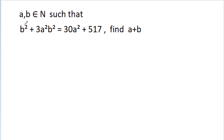In this video, we have given that a and b belong to natural numbers such that b squared plus 3a squared b squared is equal to 30a squared plus 517. Then we have to find the value of a plus b.